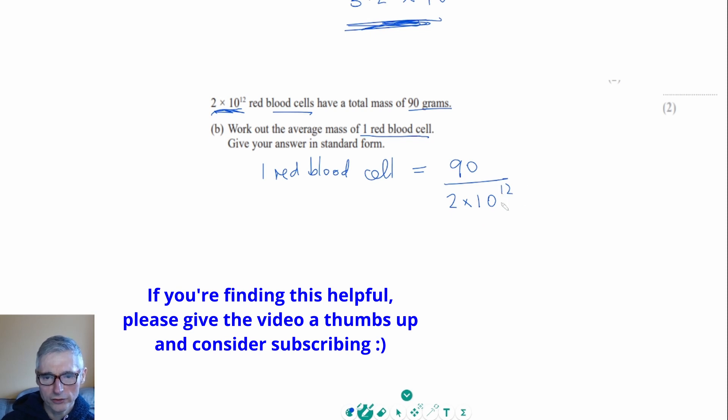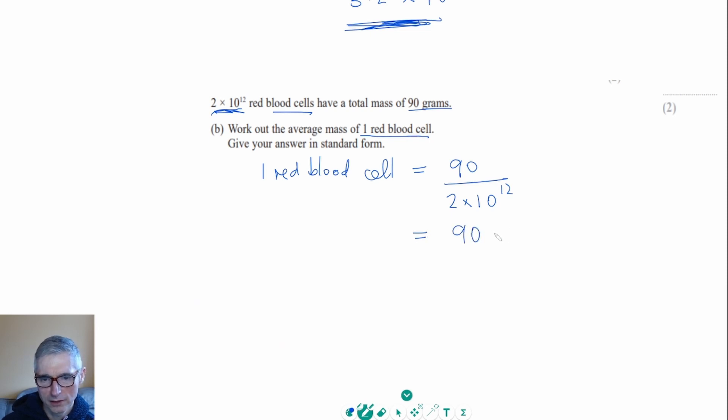And then we can use some of the rules of indices. Since we're dividing by 10 to the 12 here, we could rewrite this as being 90 times, and if we put it in the numerator, the top line of the fraction, we can change the sign on the power and that's going to become times 10 to the minus 12, still over 2. And now it's quite easy to divide the 90 by the 2, which means it's 45 times 10 to the minus 12.